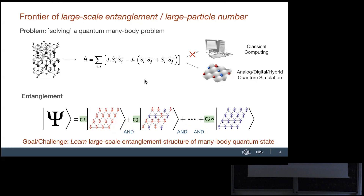There's a fundamental problem: can we learn and quantify large-scale entanglement structure for many-body quantum states, even in the regime where classical devices fail? Experimentalists provide machines, but the theory side must devise protocols — given a machine where you can make measurements and prepare quantum states, how do we learn the entanglement structure? Specifically, we want bipartite entanglement and learning a Schmidt decomposition of a wave function.